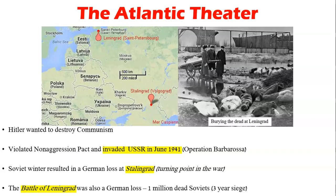Hitler wanted to destroy communism — he liked his fascism. He violated the non-aggression pact and invaded the USSR in 1941. The Soviet winter, as many know, is a terrible environment to invade. It resulted in a German loss at Stalingrad — a turning point in the war. The Battle of Leningrad was also a German loss, with one million dead Soviets. It was devastating for the Soviets, but the Germans weren't doing well either.